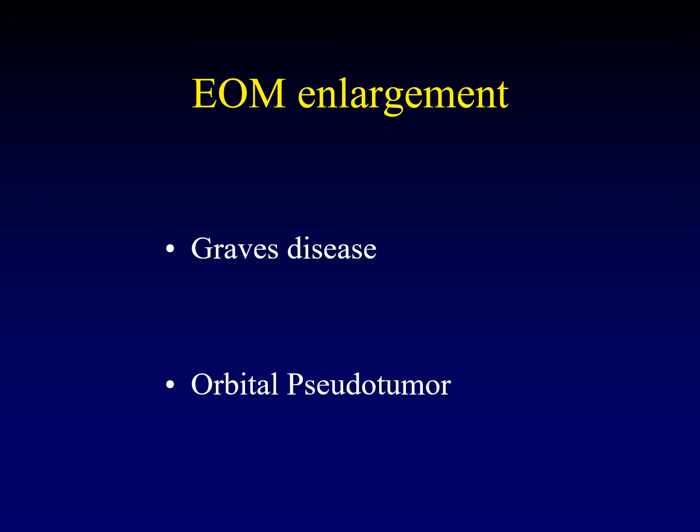The classic radiologic differential diagnosis for extraocular muscle enlargement is Graves' disease versus orbital pseudotumor. Obviously, other things can do this — malignancy and inflammation will thicken the extraocular muscles — but this is a classic radiologic differential diagnosis that deserves attention. Interestingly, this is not a major differential diagnosis clinically, because Graves' disease tends to be painless and symmetric, whereas orbital pseudotumor, the myositis form, tends to be painful and unilateral. So this is a radiologist inventing a differential diagnosis that doesn't really apply clinically in most cases.